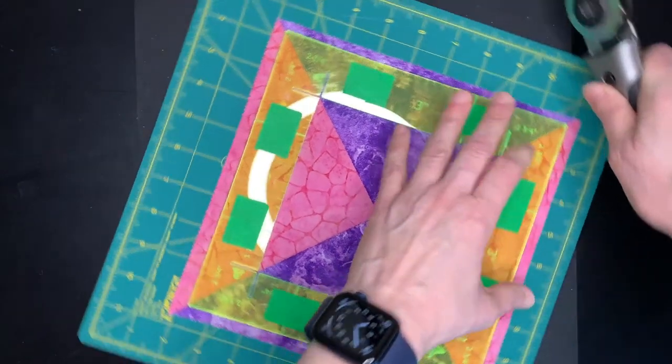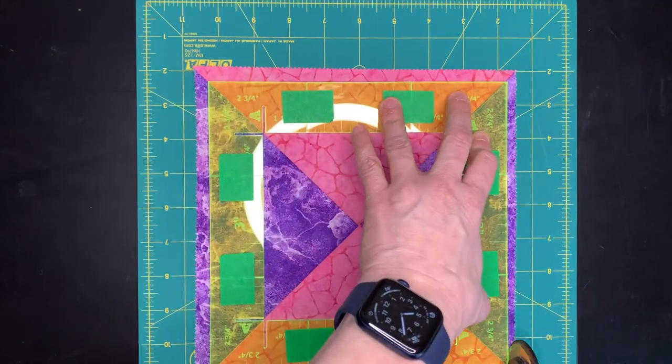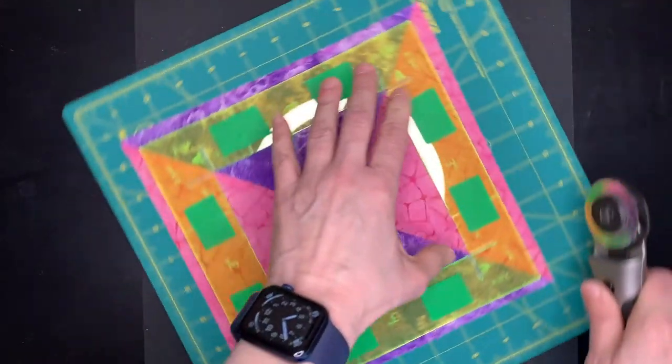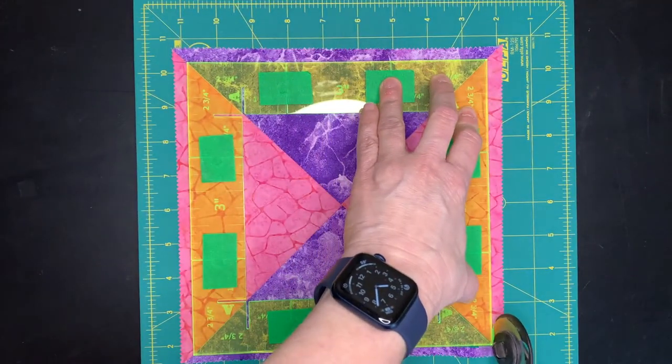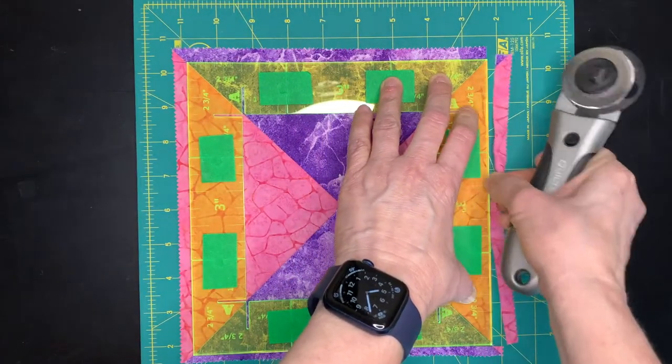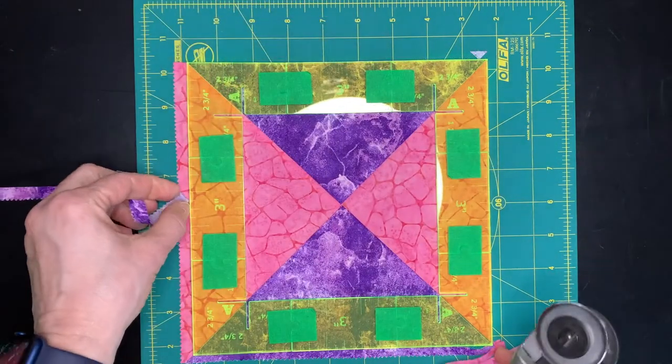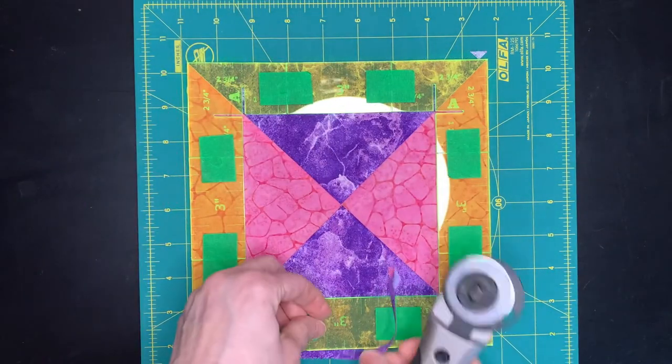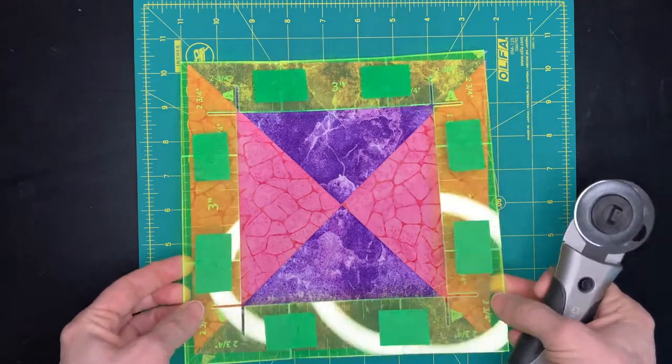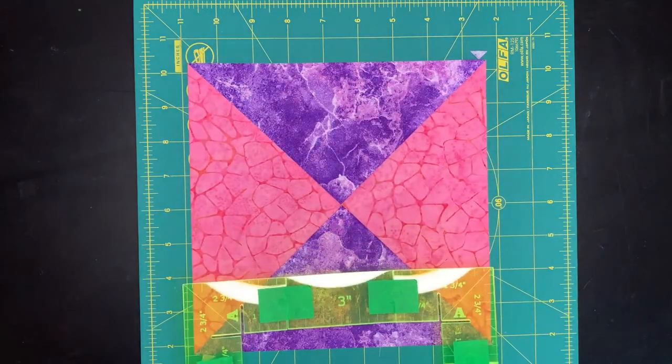What did we do before these were invented? Third side, fourth side. And now I have a perfectly trimmed, perfect eight and a half inch block.